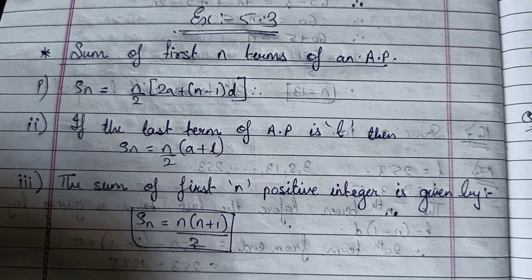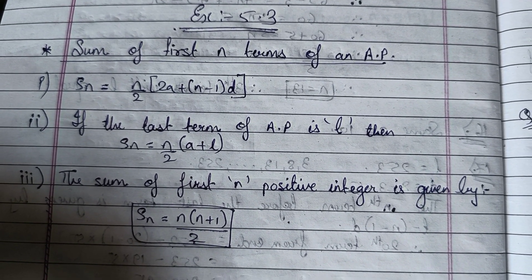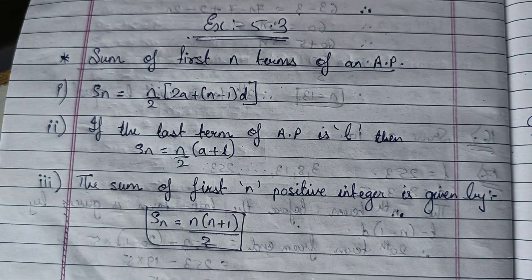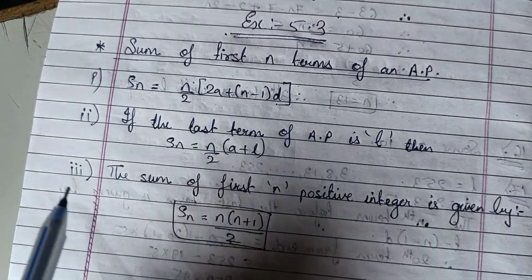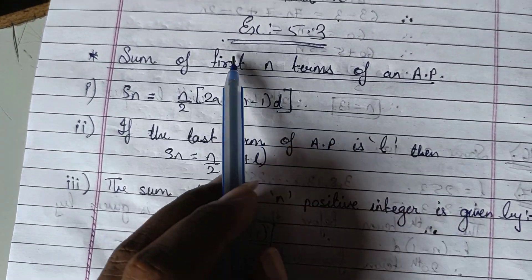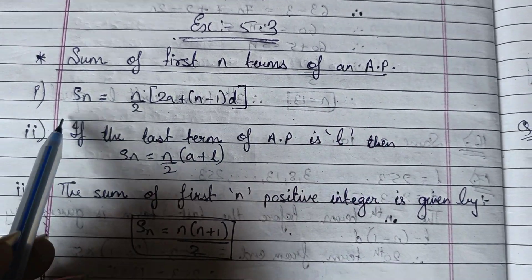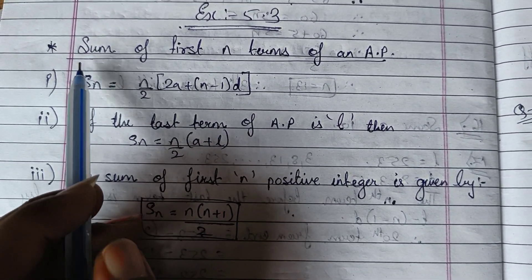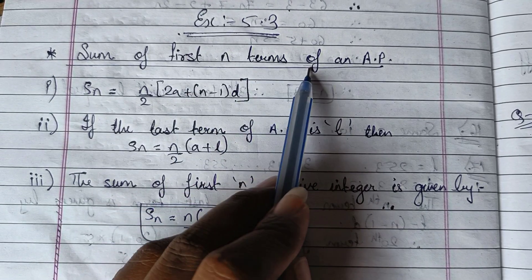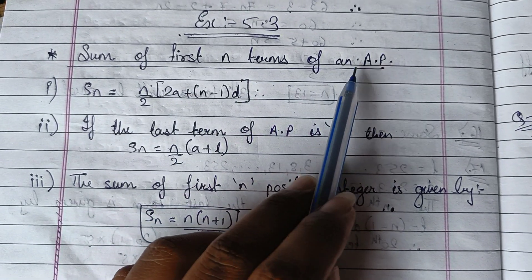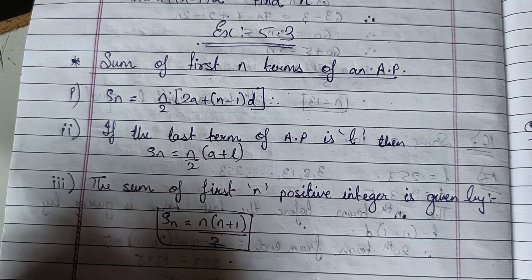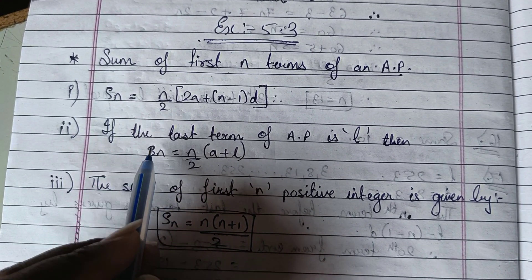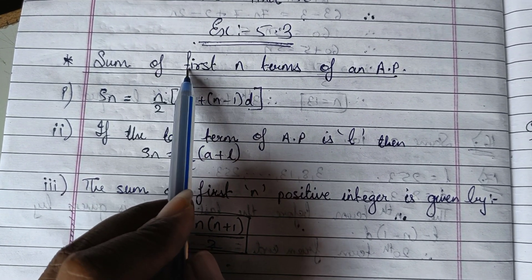Good morning students. Today we will start with Exercise 5.3, Chapter 5 of AP. Before starting the exercise, you need to understand the formulas. This exercise is based on the sum of first n terms of an AP. Until now we found the nth term of an AP; now we will find the sum of the series.